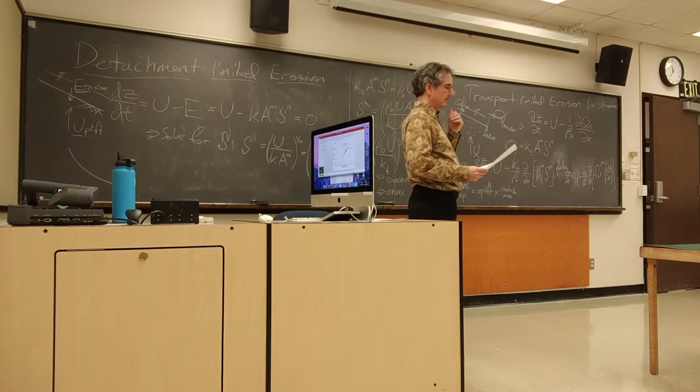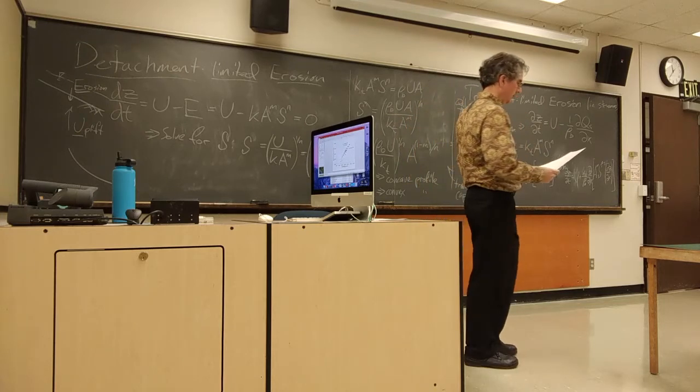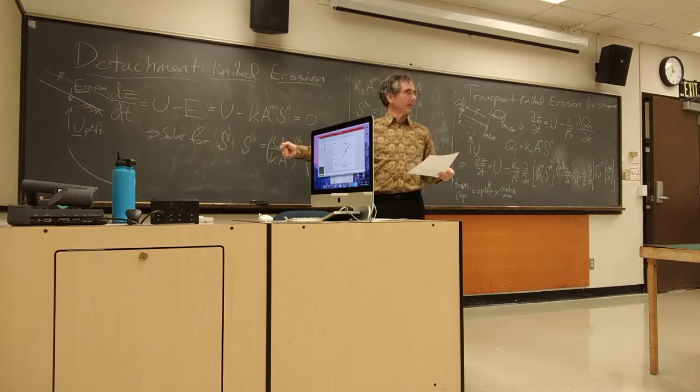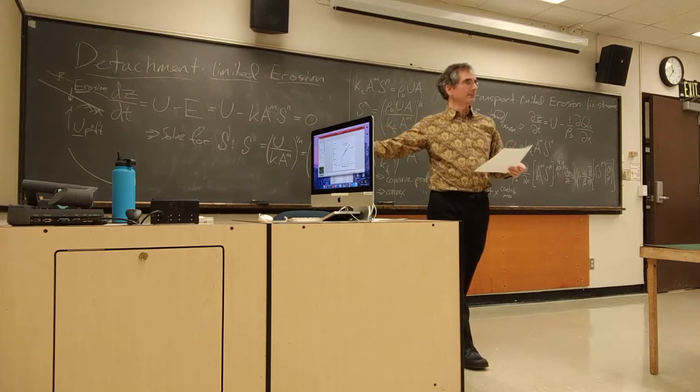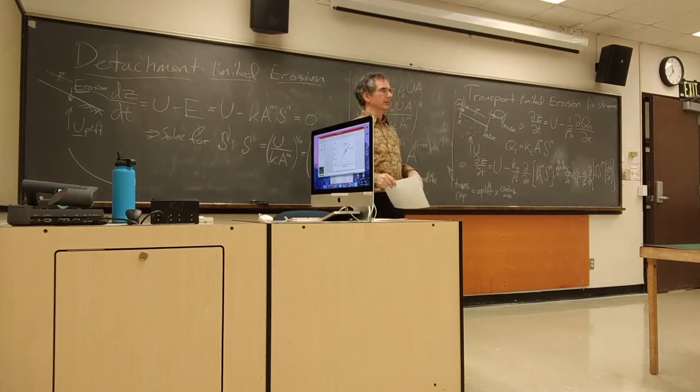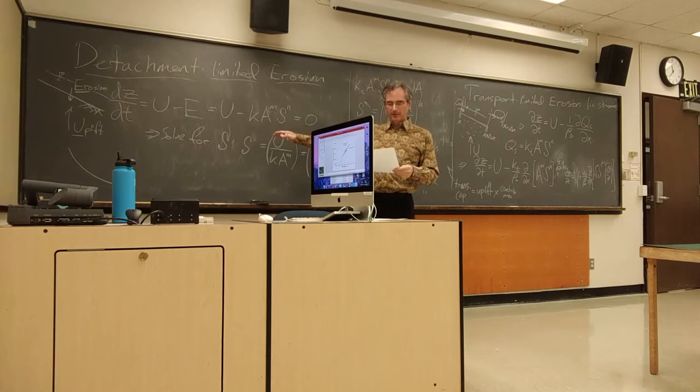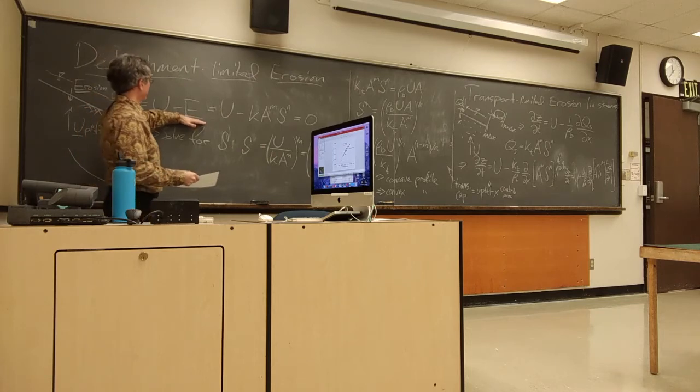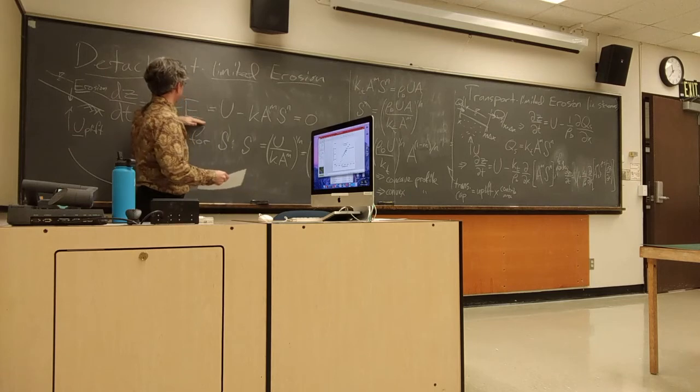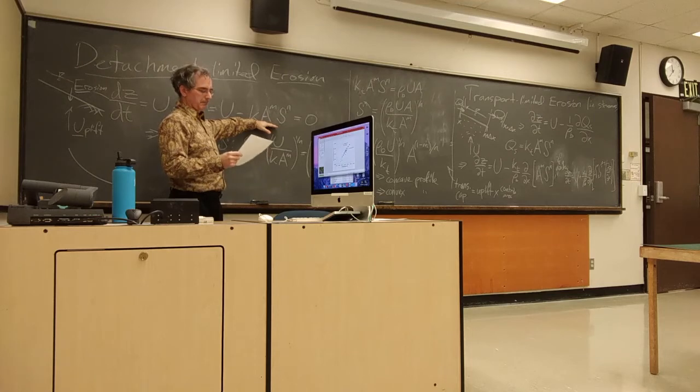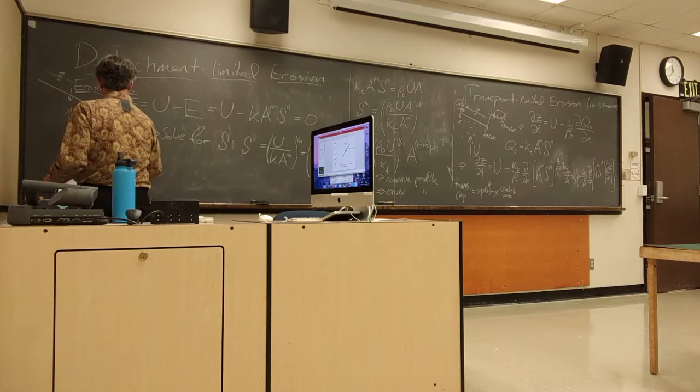So, let's look at what we should expect from each of these slope equations. Now, for some general dependencies, I want to focus on the simpler detachment limited case. It's just easier to see what's going on there. And a lot of what we see there is pretty well transferable with some caveats to the transport limited case. So, we look at detachment limited case, the detachment limited case, we note that what we're saying with this step in our equation is that the erosion rate is equal to this K times A to the M, S to the N.